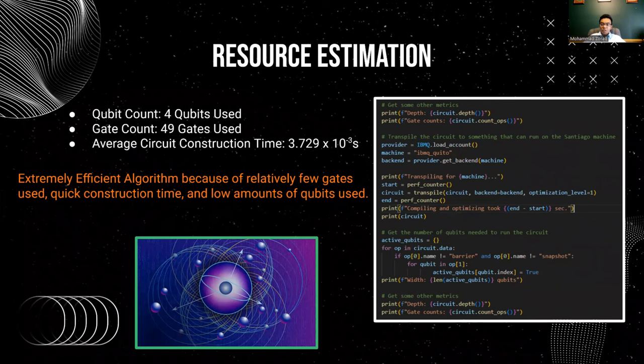Some of the resource estimation of the HHL algorithm that we implemented. The qubit count used was four qubits, and we used 49 gates within the HHL algorithm, and the average circuit construction time was about 3.729 nanoseconds. Overall, this HHL algorithm was extremely efficient because of the relatively few gates used, the quick construction time, and the low amount of qubits used.